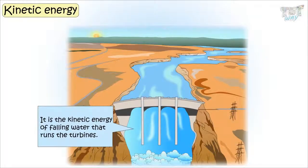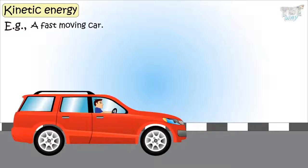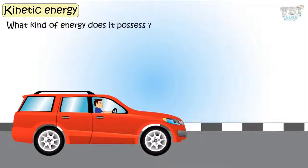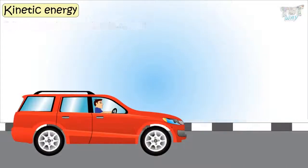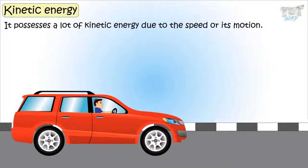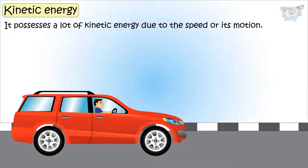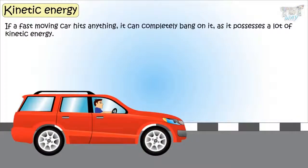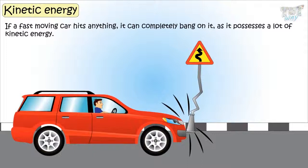Here is another example — a fast-moving car. What kind of energy does it possess? It possesses a lot of kinetic energy due to its speed or motion. A fast-moving car, if it hits anything, can completely bang into it as it possesses a lot of kinetic energy.